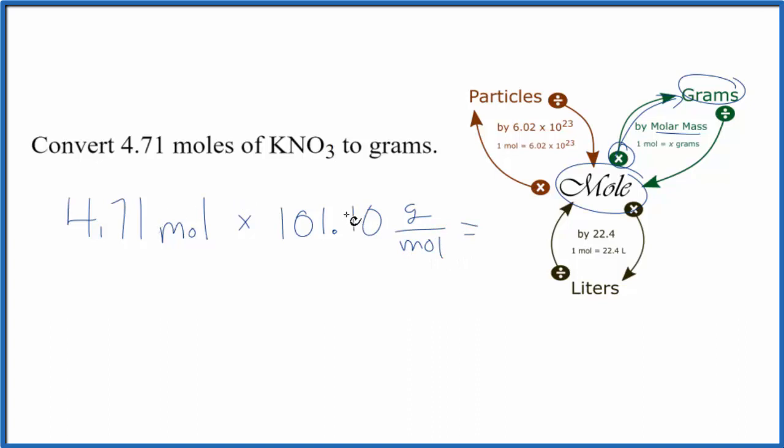So we're going to multiply these two numbers together. When we do that, moles on top and the bottom cancel out. We're going to be left with grams. So we end up with 476.18 grams of KNO3.